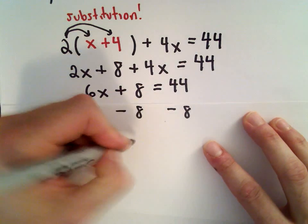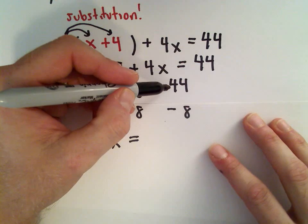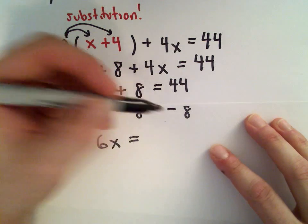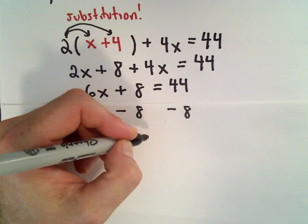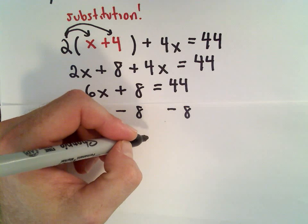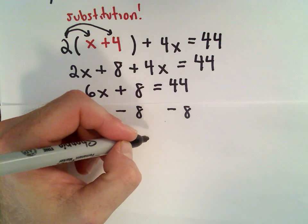So we'll have 6x equals, let's see, 44 minus 8. That's going to give us 36.